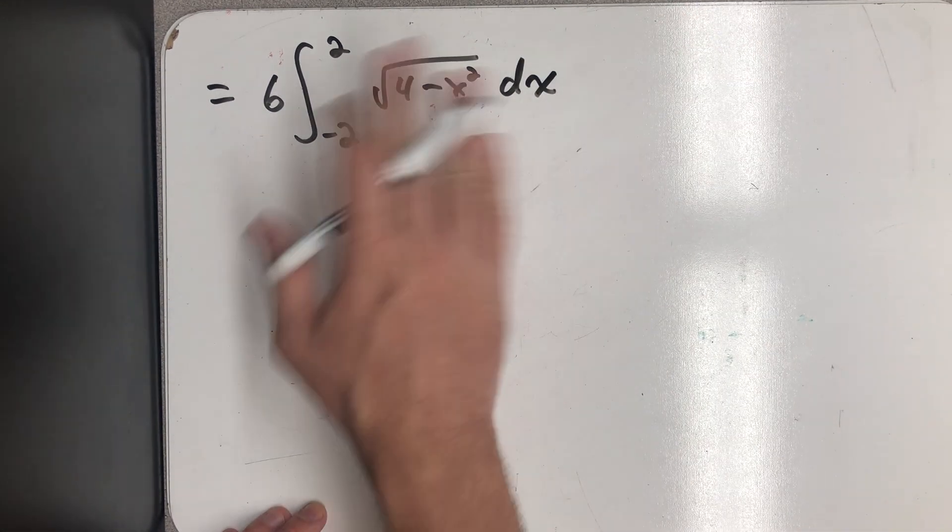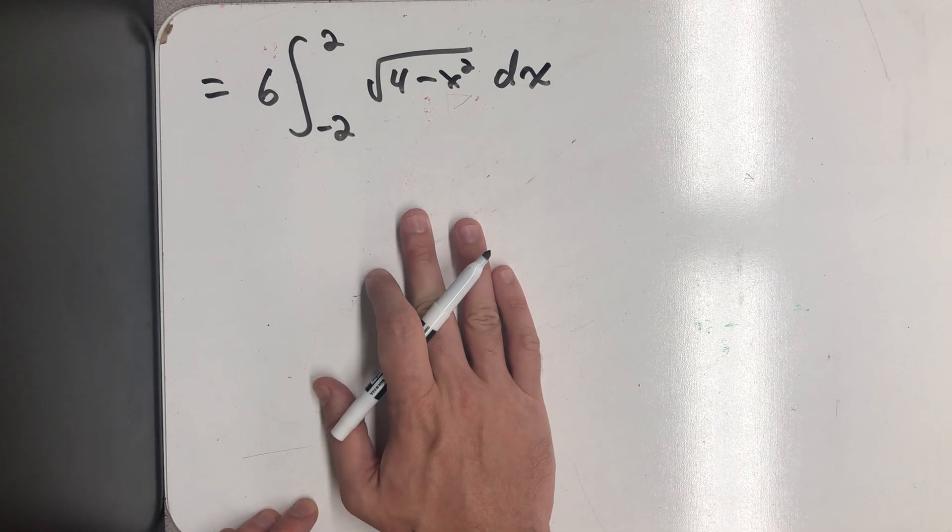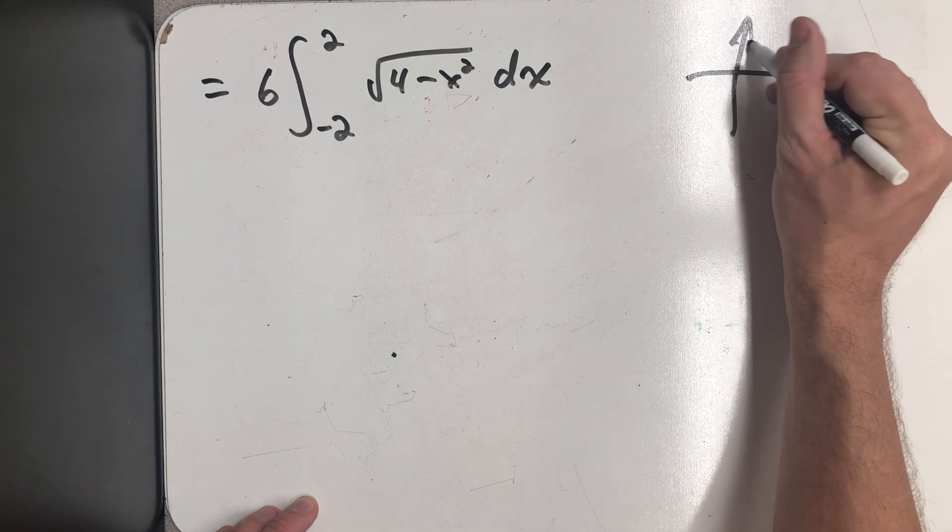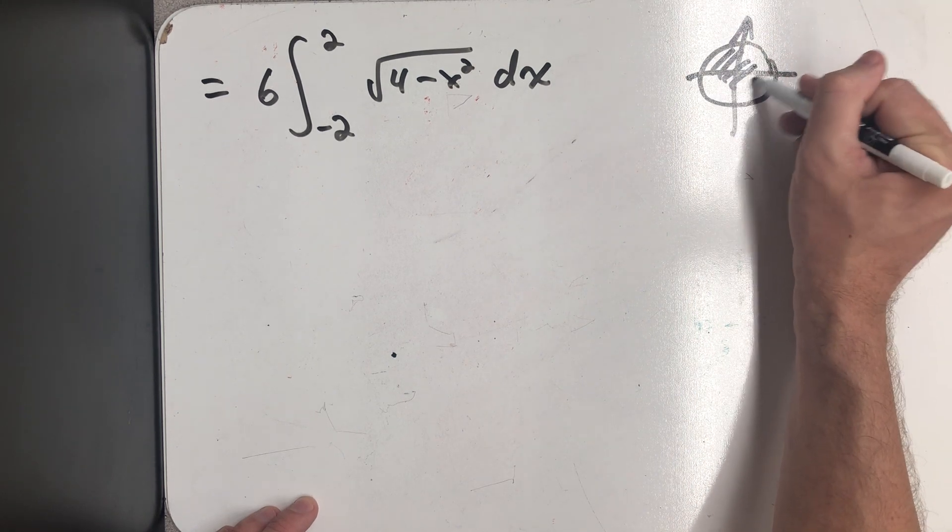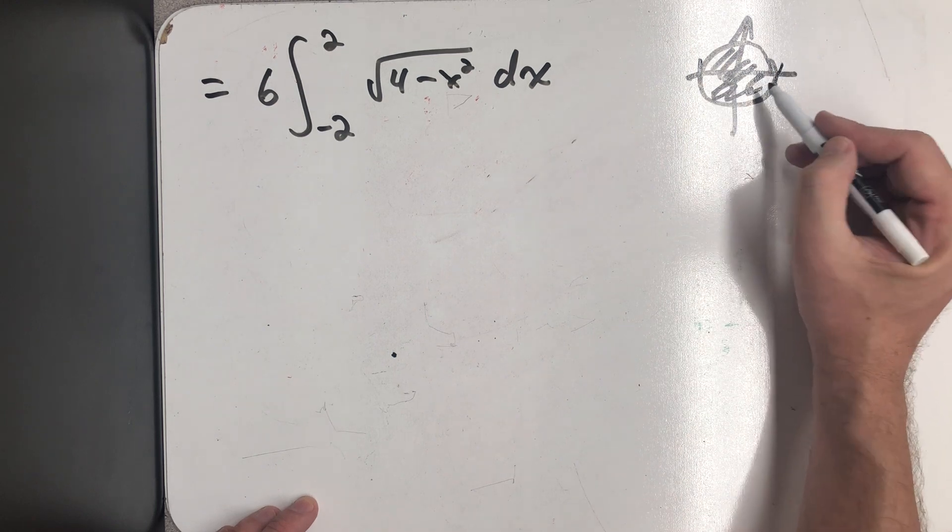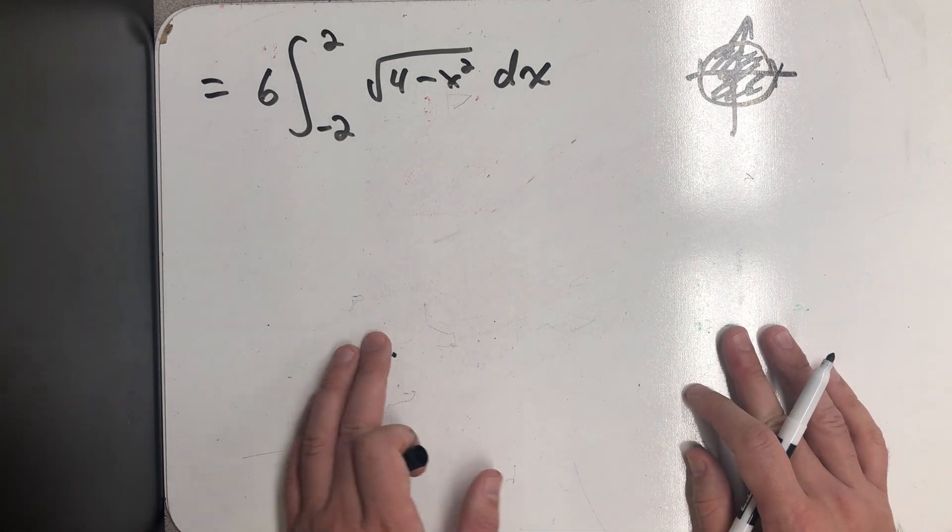And so now I have to integrate this, and this is one of those problems I always tell my Calc 2 students never to do anything too fancy on, because this is really just an area problem. It's asking me to find the area of the top half of a circle of radius 2 centered at the origin.